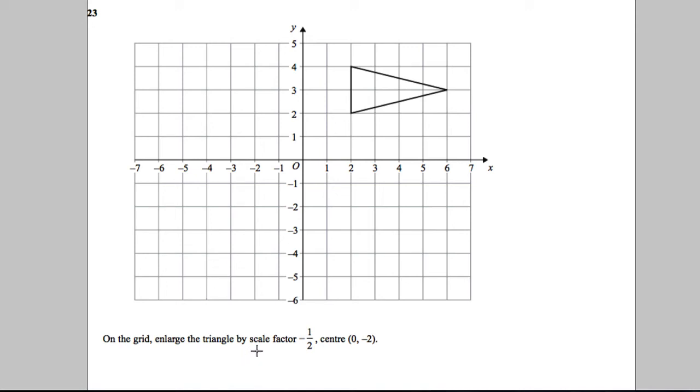Problem 23: On the grid, enlarge the triangle by scale factor negative a half, center 0, negative 2. This is very important - read this carefully. The first thing I'm going to do is put my center at 0, negative 2, which is going to be here. Now there are different ways of doing this.